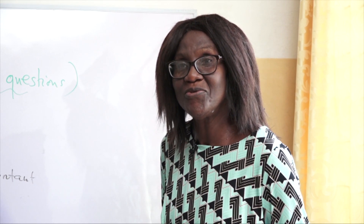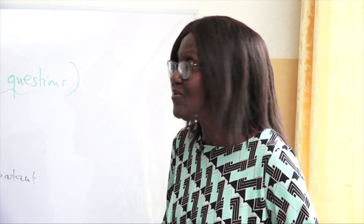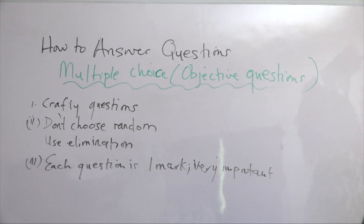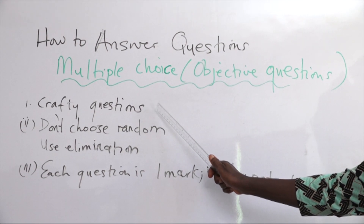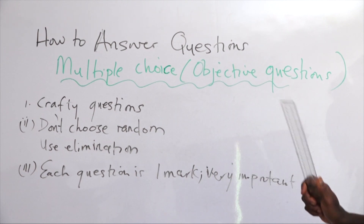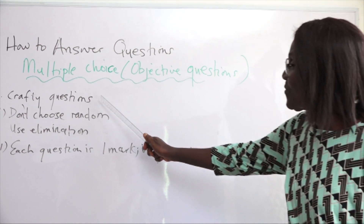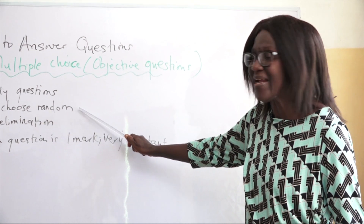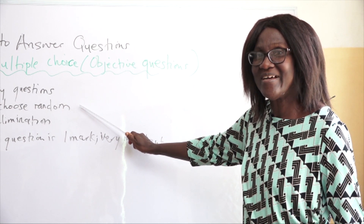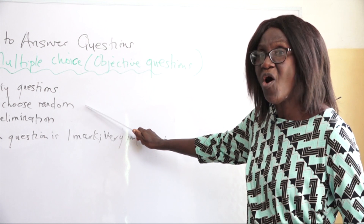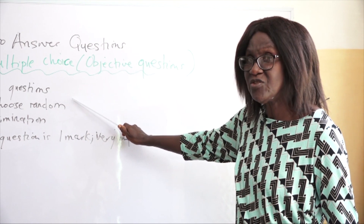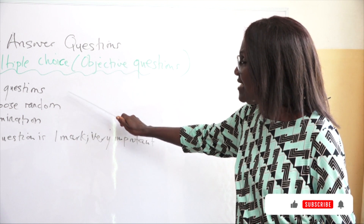Now let's discuss how to answer multiple choice, or objective, questions. These are very crafty questions — structured with decoys and camouflage, and the responses are crafty with decoys as well. Never choose quickly. Read the question well and weigh all the answers, because the answer will not be too clear and the correct option will not be too visible.